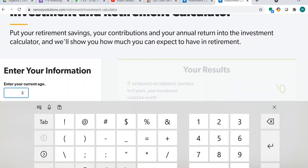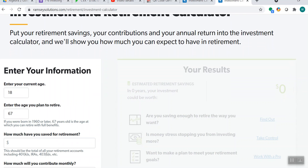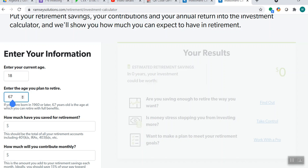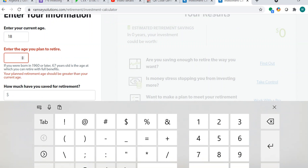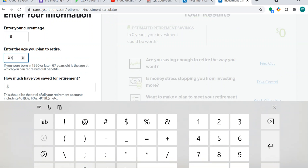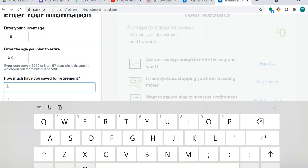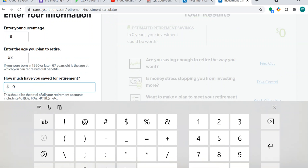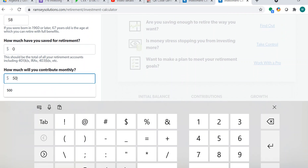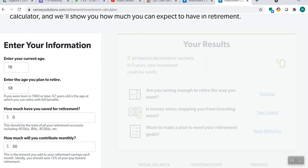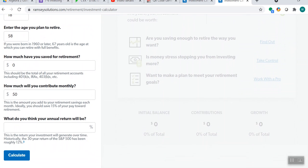You are 18. We said that we're going to do this for 40 years. So 40 years from now, you are going to be 58. How much have you saved for retirement? Well, you're going to start off with zero. And how much will you contribute monthly? 50. That's it. And what do you think your annual return will be? We're going to put in that 7.7 and calculate.